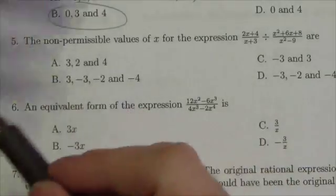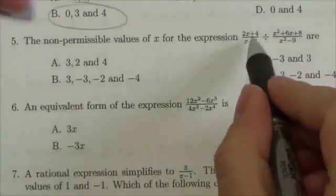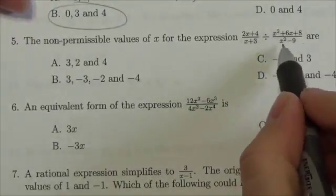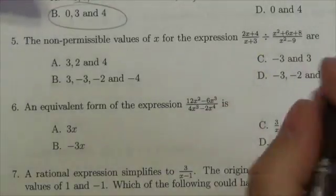In this question we need the non-permissible values of x for the expression: 2x plus 4 over x plus 3 divided by x squared plus 6x plus 8 over x squared minus 9. The first thing we've got to do is factor.